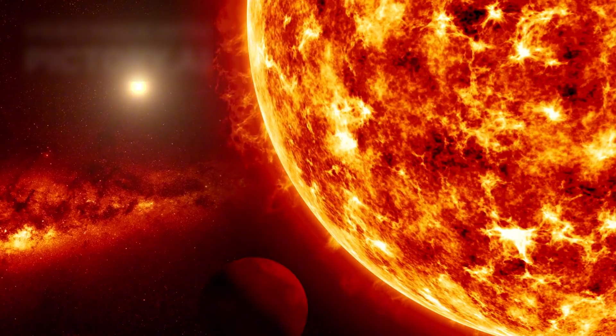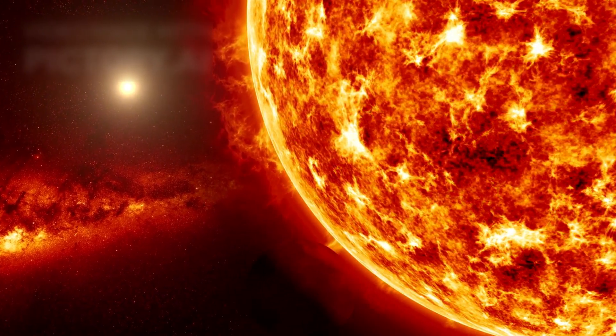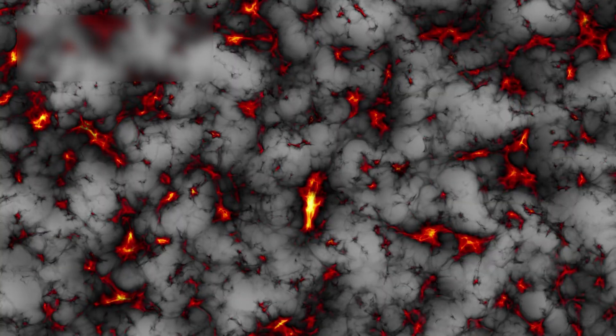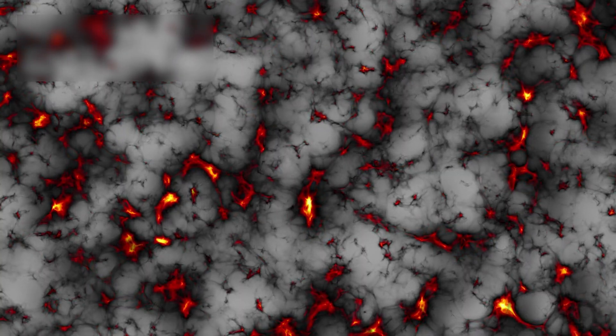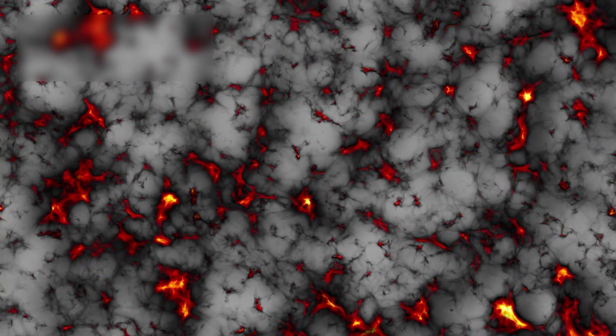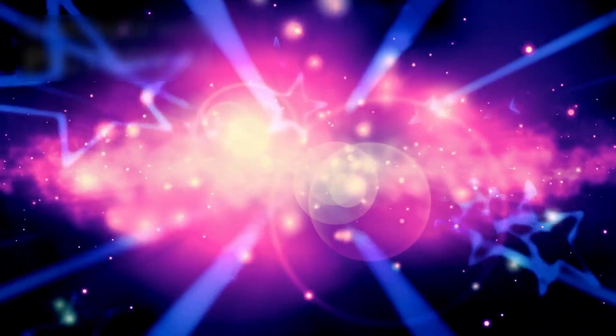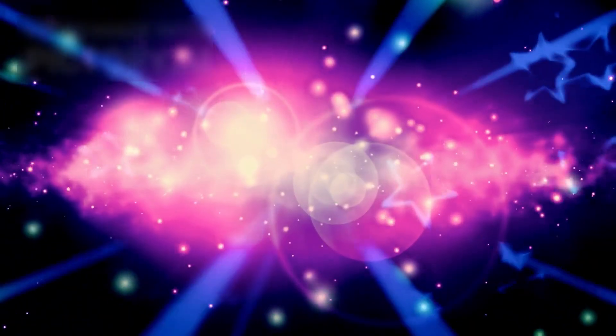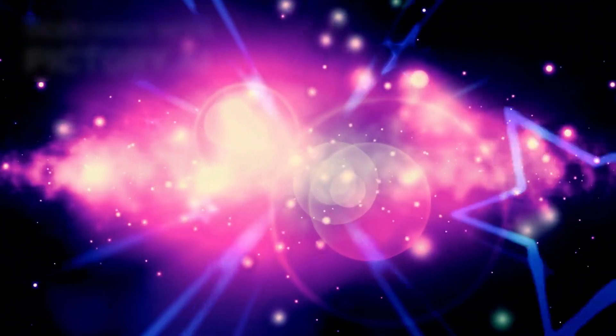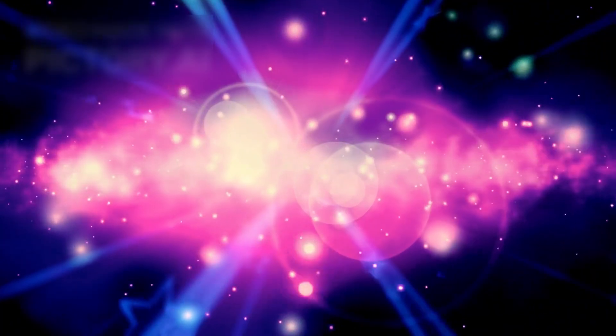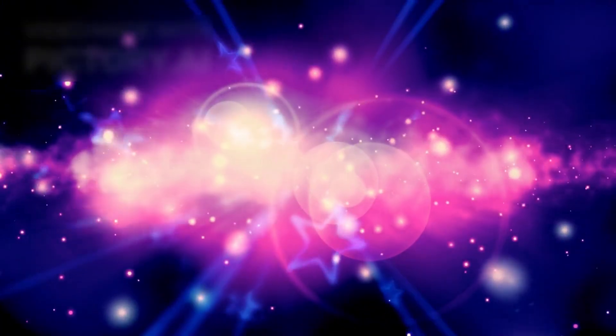Kaku emphasizes the profound implications of this discovery. If these galaxies truly exist as observed, we must reconsider how quickly matter can organize into complex structures. Either the universe is older than our current calculations suggest, giving more time for galaxies to grow, or the processes that form galaxies are far faster and more efficient than previously imagined. Both possibilities demand a re-evaluation of key assumptions underlying the Big Bang theory.